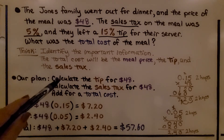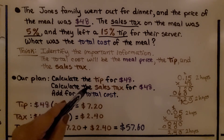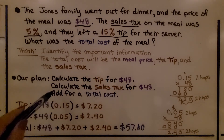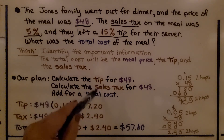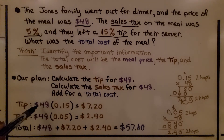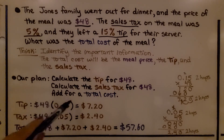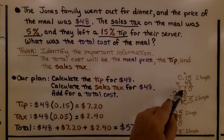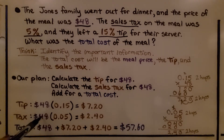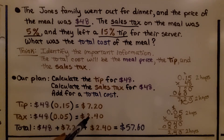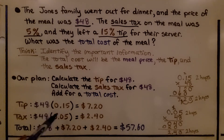Our plan is to calculate the tip, then calculate the sales tax for $48, then add them for a total cost. The tip on $48: we multiply 48 times 15% written as a decimal, giving us $7.20. The tax on $48 at 5% written as a decimal is $2.40. Now we total the $48 for the meal, plus the tip, plus the tax, and we get $57.60.